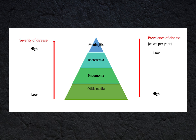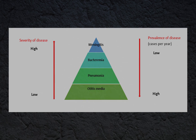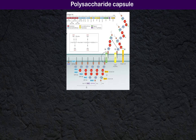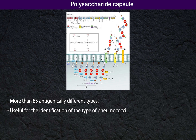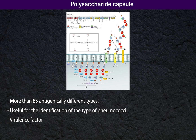Pneumococci have a polysaccharide capsule. There are more than 85 antigenically different types, which can be useful for the identification of the type of pneumococci. The capsule is one of the virulence factors, which is helpful to protect the bacteria from phagocytosis.